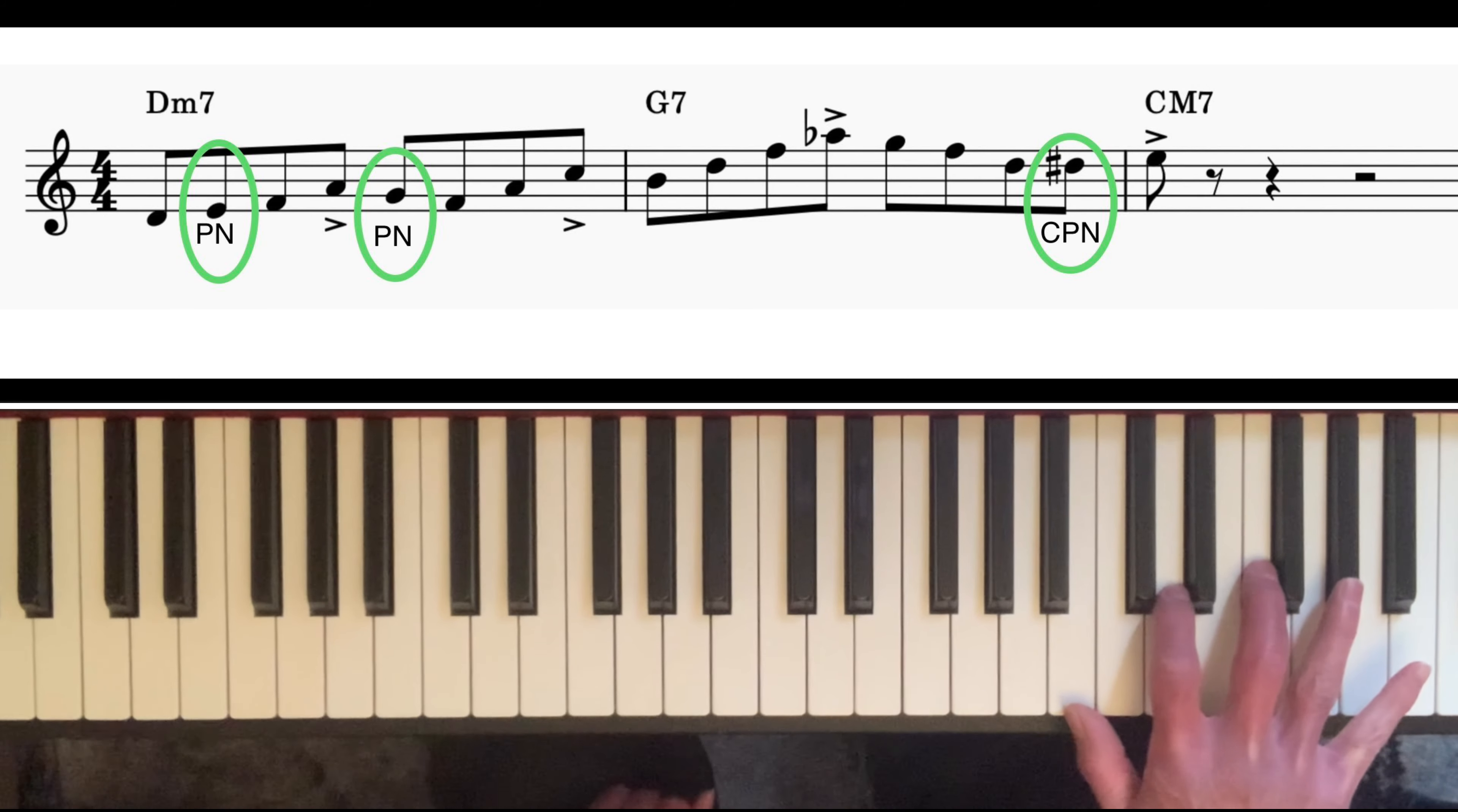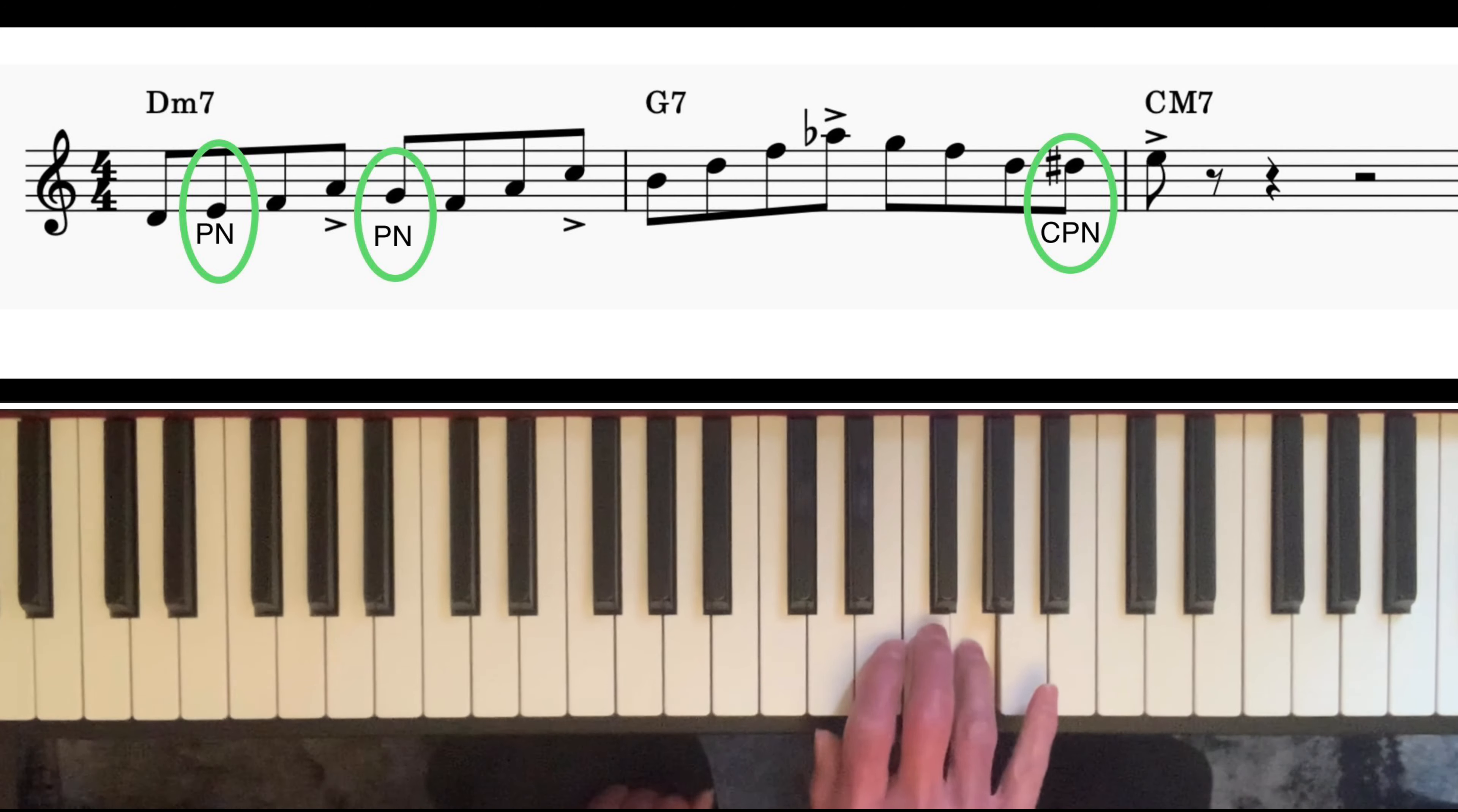I then finished the bar of G7 off with this particular pattern. Again, I'm just outlining chord notes—G7, that's the root, the seventh, the fifth. Now I'm aiming to land on the third of C major seven, and I do it by putting a little chromatic passing note D sharp in between D and E.